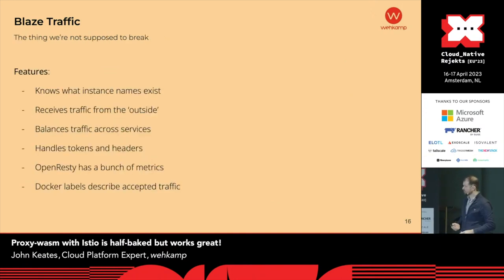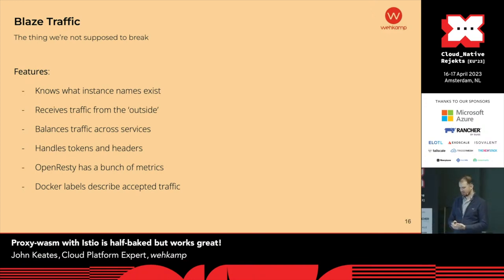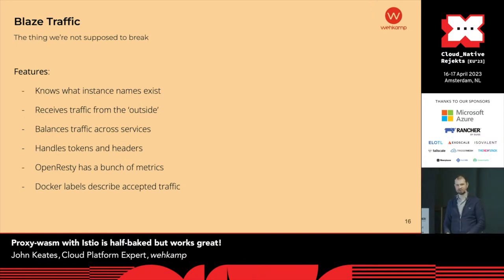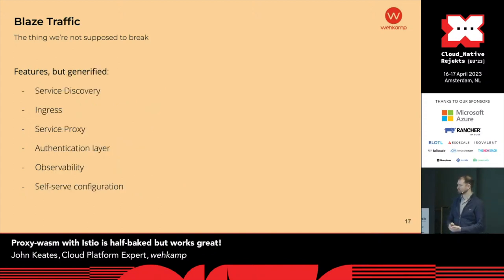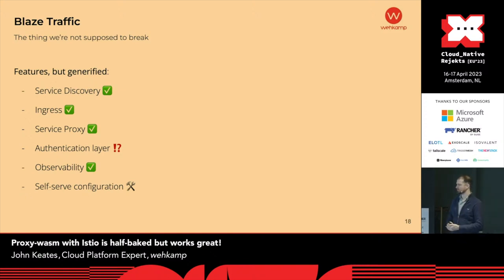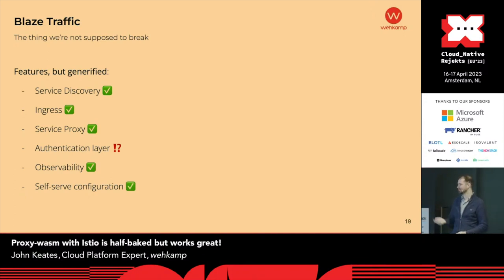We take what we have and turn it into a shopping list of features we need to support at minimum. We turn that into more generic terms and compare with what's available in Istio — and we get a pretty good match. What is not matched is the authentication layer, and the self-serve configuration, because our old configuration relied on a very long Docker label in the image that would get parsed during deployment to contain traffic configuration — so non-standard that nothing ever supports it. But we're going to cheat a little bit and pretend that's okay.